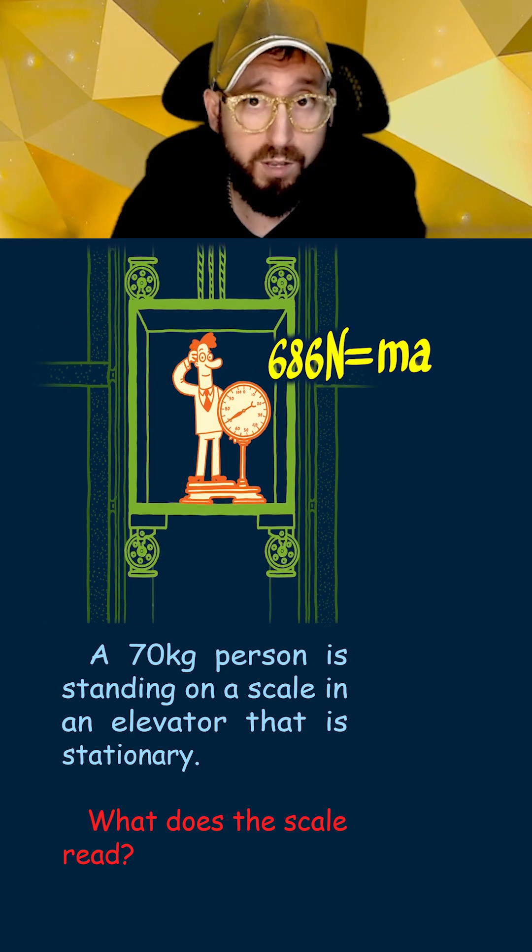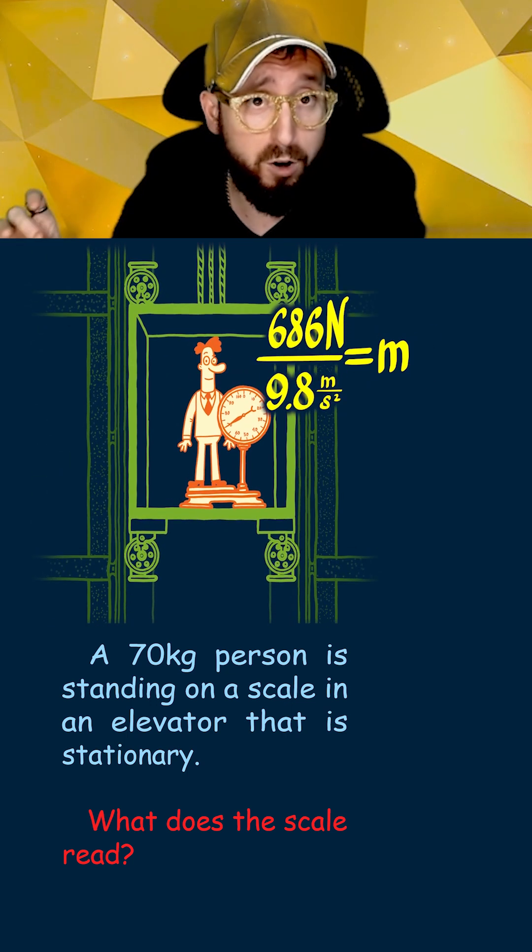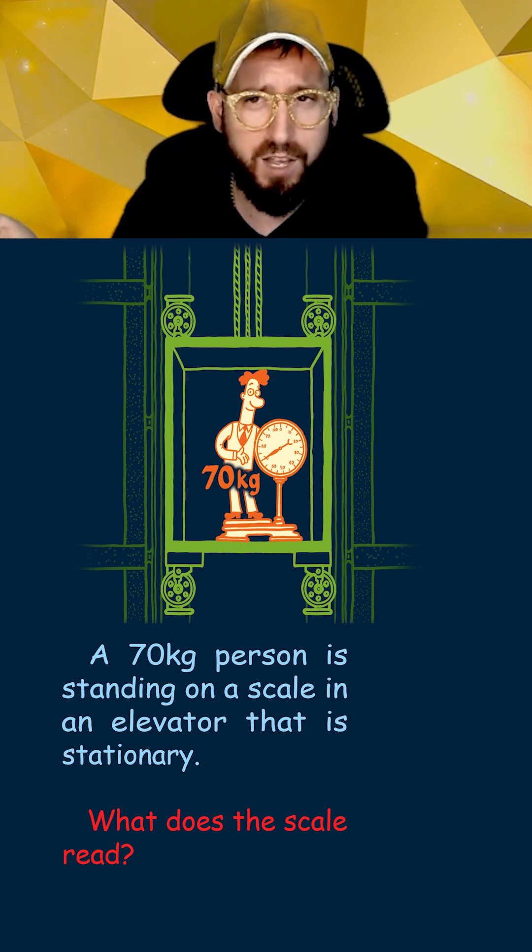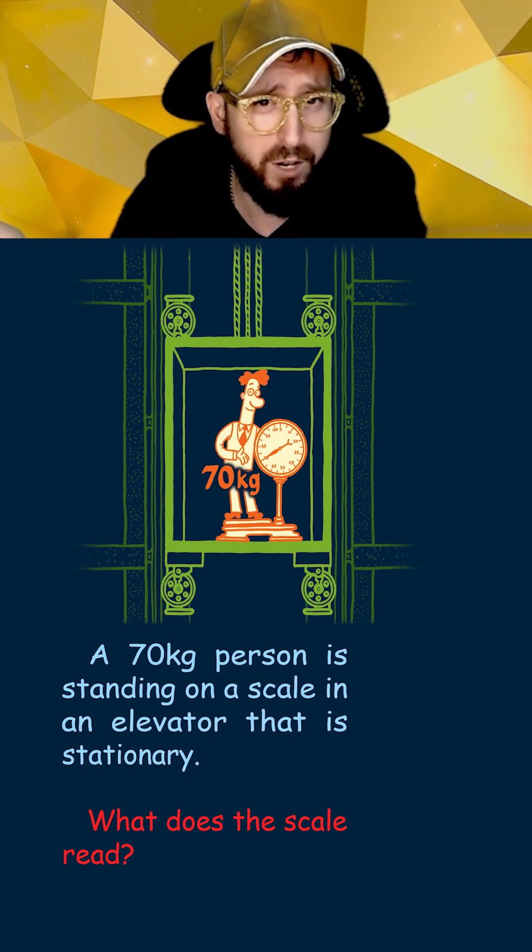The last step is to take our normal force and divide by g, which gives us an apparent weight of 70 kilograms. This makes sense, because someone with a mass of 70 kilograms feels like they weigh the same 70 kilograms when the elevator isn't moving.